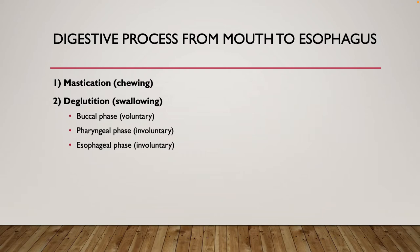After we chew, we're going to swallow the food that we have now chewed — both physically, mechanically, and chemically digested. When we go into the swallowing or deglutition phase, there are going to be a couple of sub-phases: a buccal phase, a pharyngeal phase, and an esophageal phase.